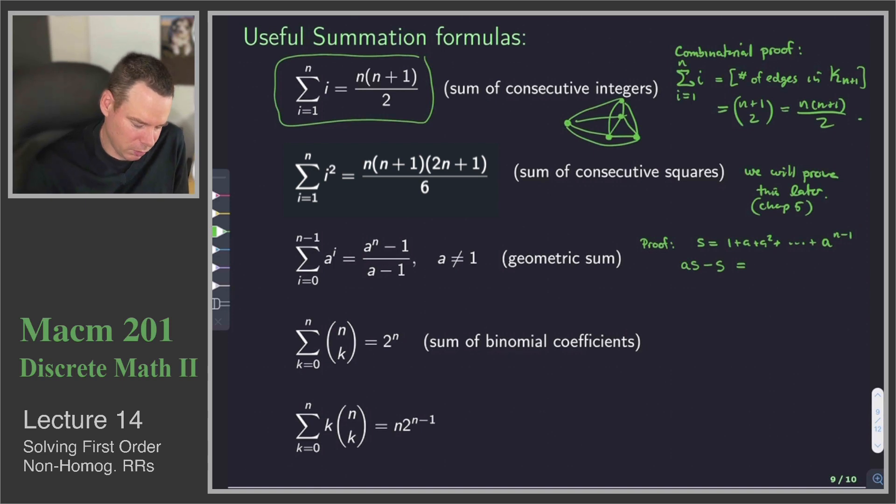And then if I subtract off all these terms, there's only two that survive, a to the n and 1. And so therefore, S is equal to a to the n minus 1 over a minus 1. And there we go. There's our proof of that one. So that was a little bit of algebra.